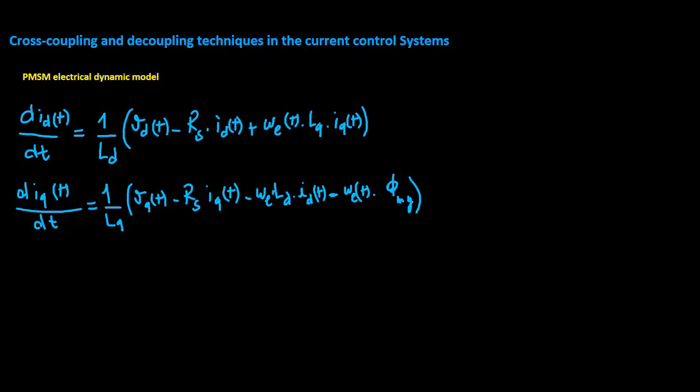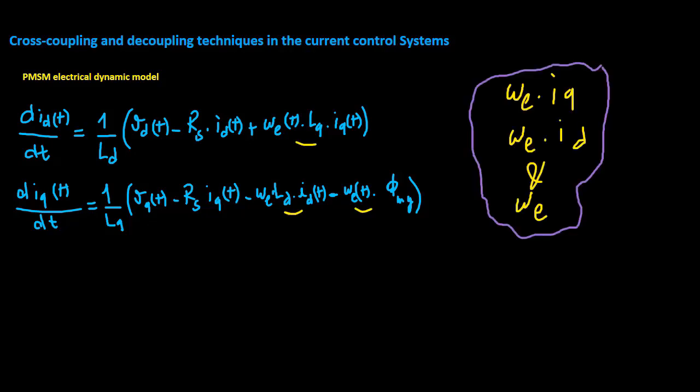In these equations for the PMSM dynamic electrical model, non-linear cross coupling terms exist through these products and variables, and these cross coupling terms can be eliminated by feed forward manipulation.